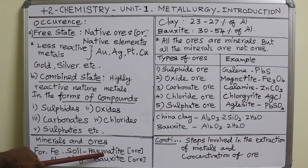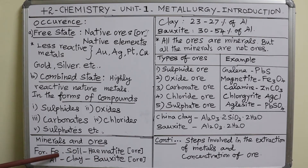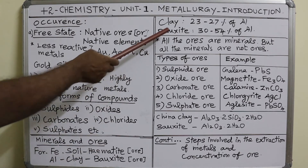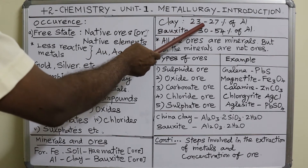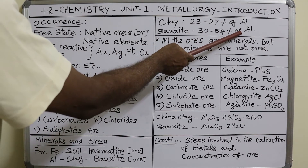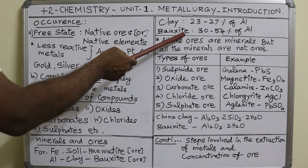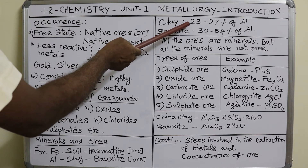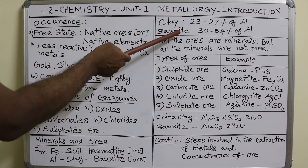So the definition of ore is: a compound from which a metal can be extracted profitably. Hematite is the ore of iron. Similarly, aluminum is present in clay — particularly china clay — and also in bauxite. Bauxite is the ore of aluminum. Clay contains 23 to 27 percent aluminum, whereas bauxite contains 30 to 54 percent aluminum. Since bauxite has a higher percentage, bauxite is the ore of aluminum, while clay is only the mineral of aluminum.